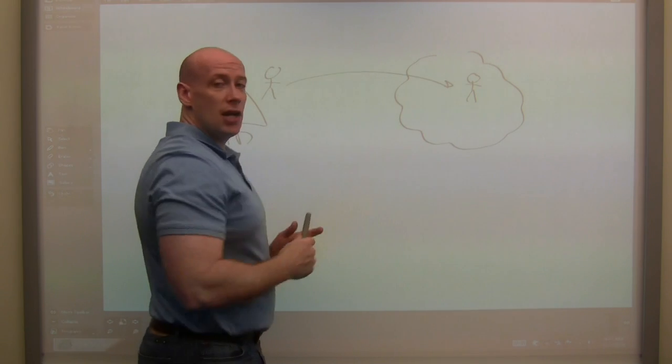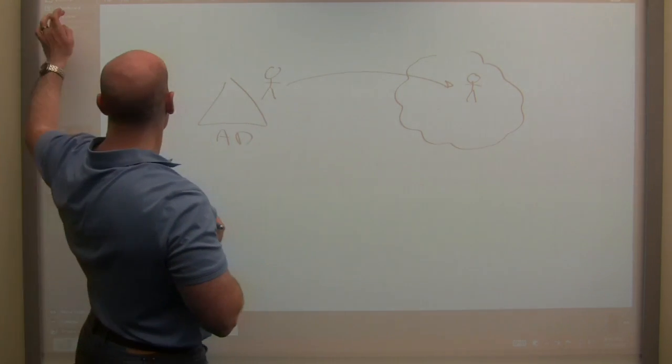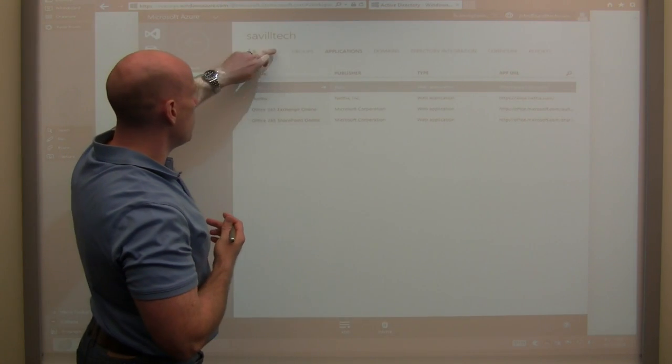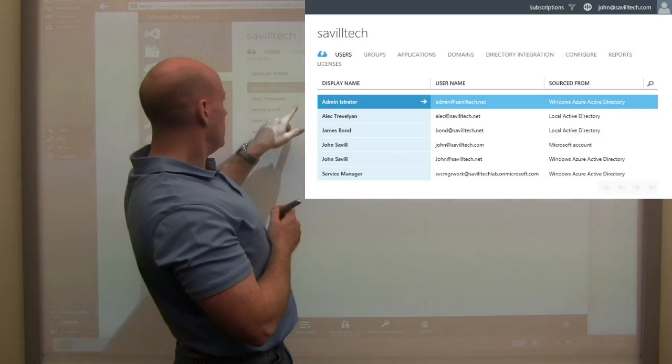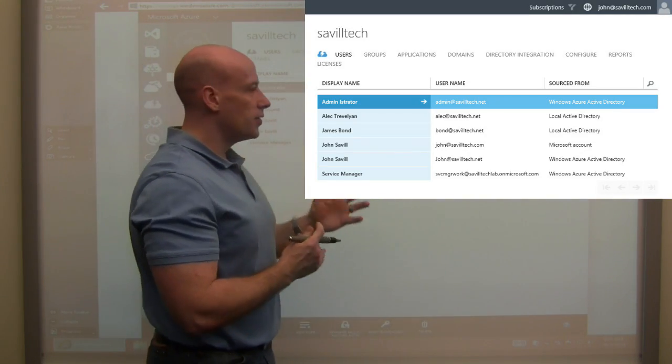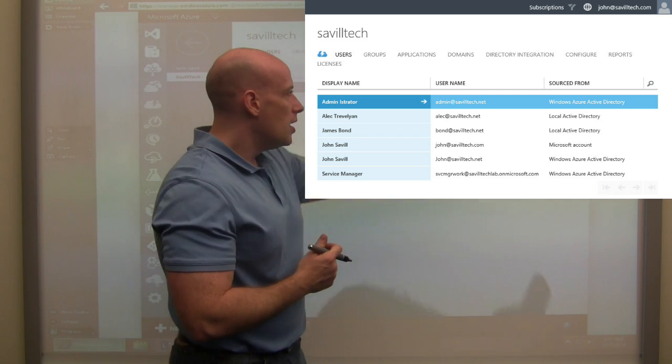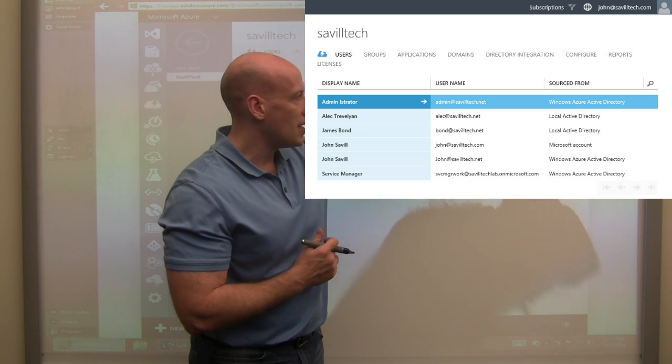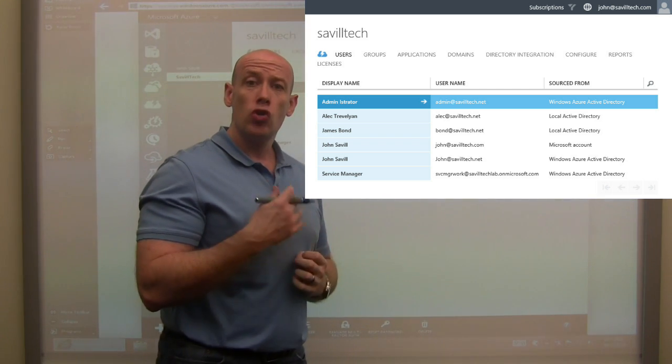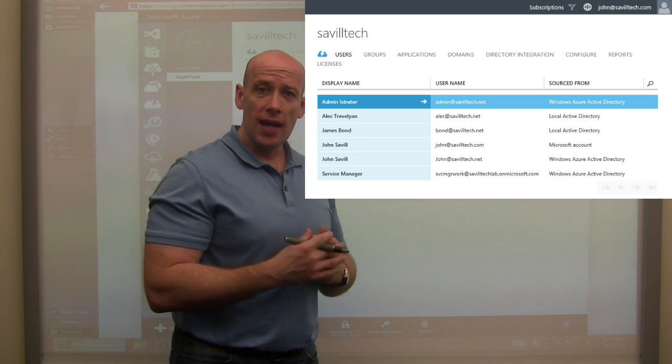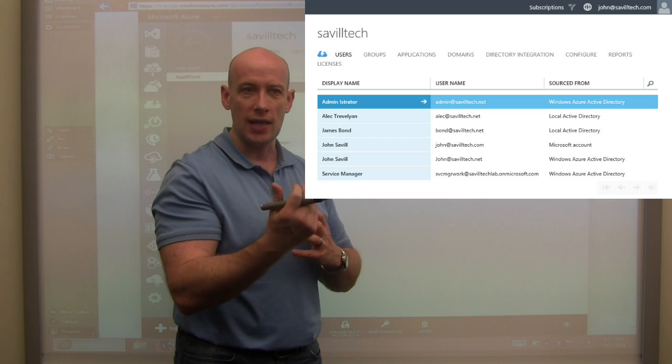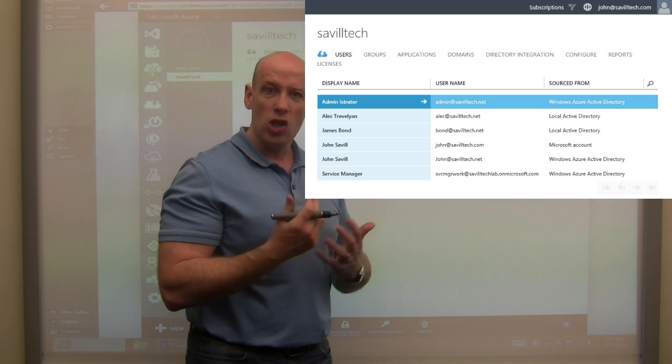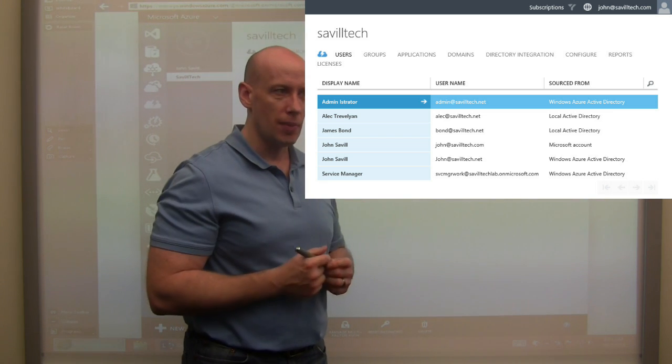And that's how I would populate the Azure Active Directory. And I can kind of see that if I look at my example of my users, you can see I've got a couple here, Alec Trebellion and James Bond, a 007 thing. But you can see the source from local Active Directory. These were created using that dir sync, the Azure synchronization between my on-premises Active Directory and Azure AD. So it's not like I have to manually go and create these things. It's going to get created automatically.